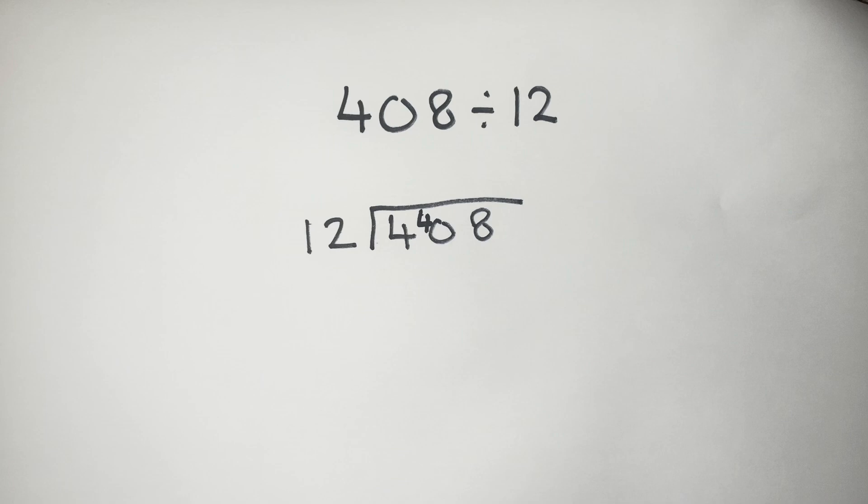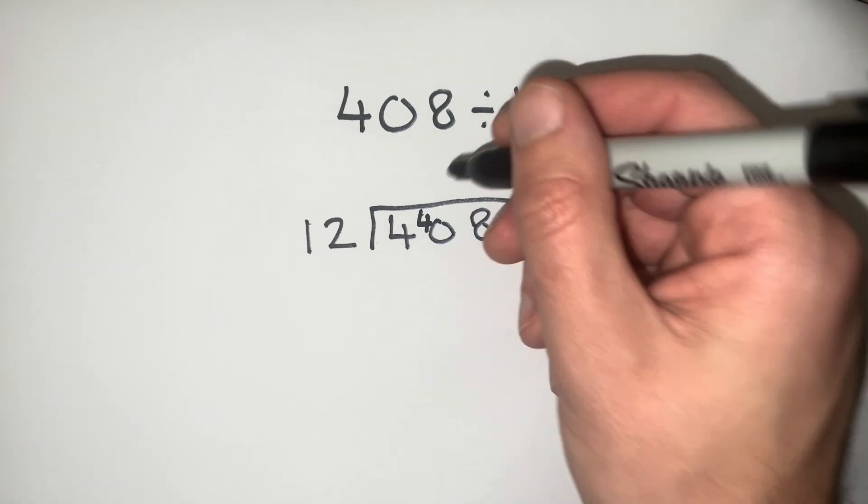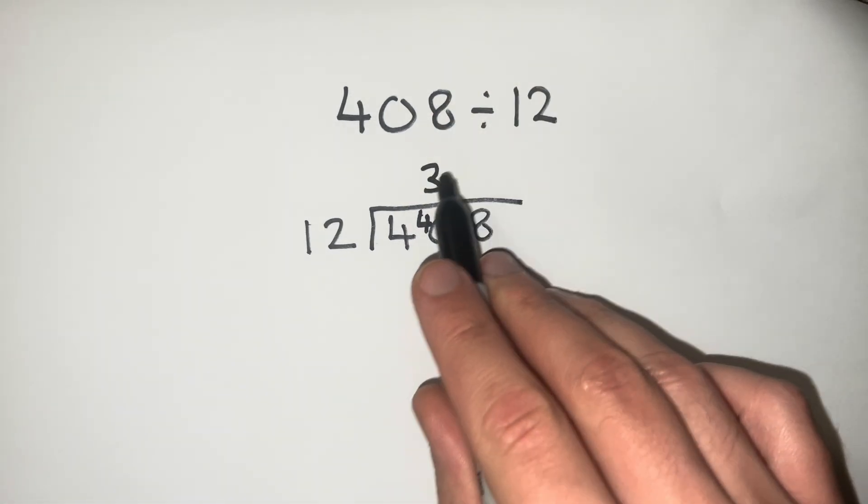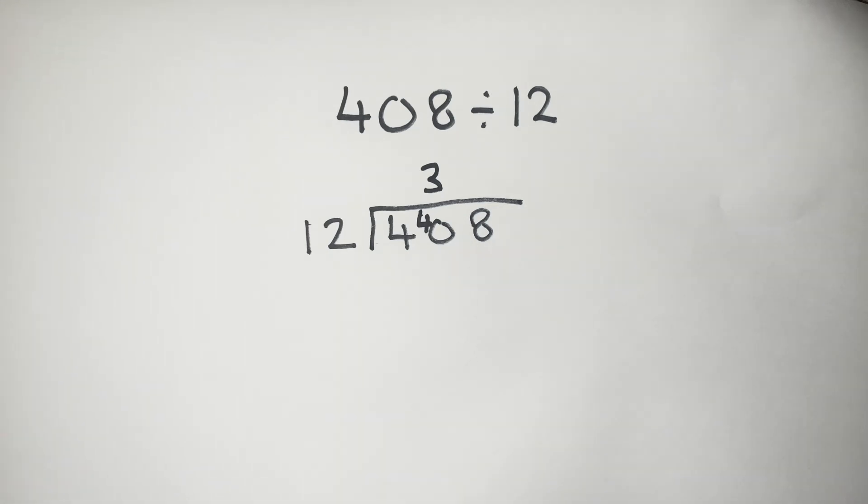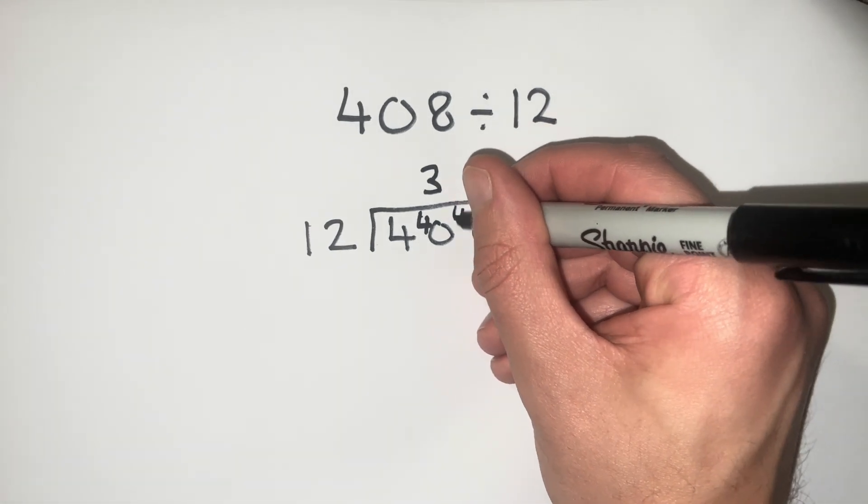How many 12s go into 40? Well that's going to be 3. And since 3 times 12 is 36, we have 4 more left over that's going to carry on to this 8.